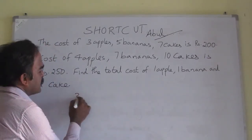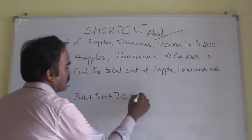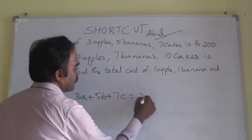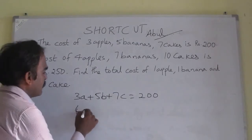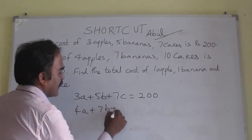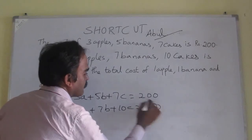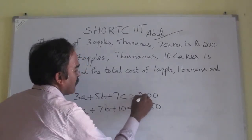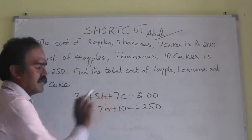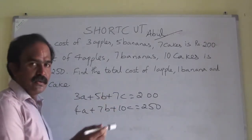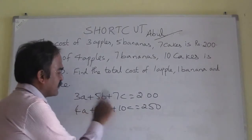The first equation is 3 apples, 5 bananas, and 7 cakes is Rs. 200. And the second equation is 4 apples, 7 bananas, and 10 cakes is Rs. 250. Now, once you observe this, just leave the constant terms — A, B, C and all. Now observe the coefficients: this is 3, this is 5, this is 7.